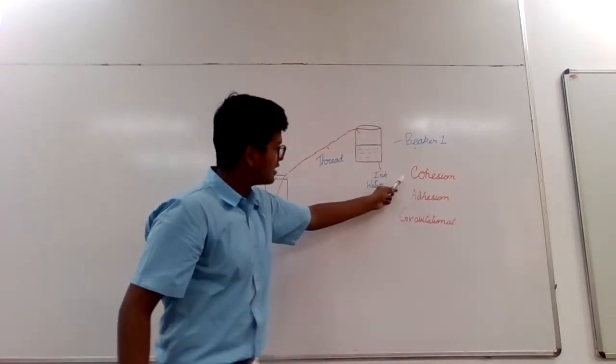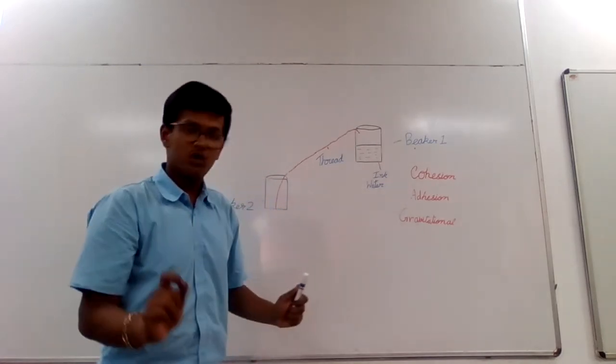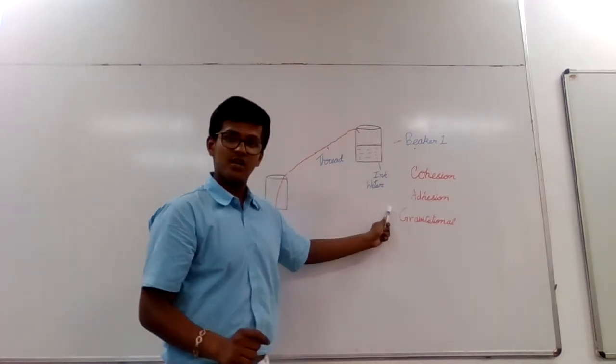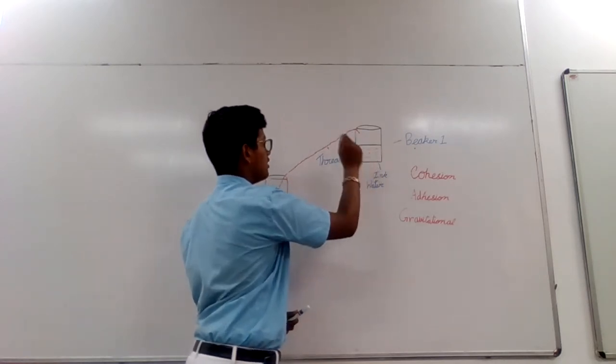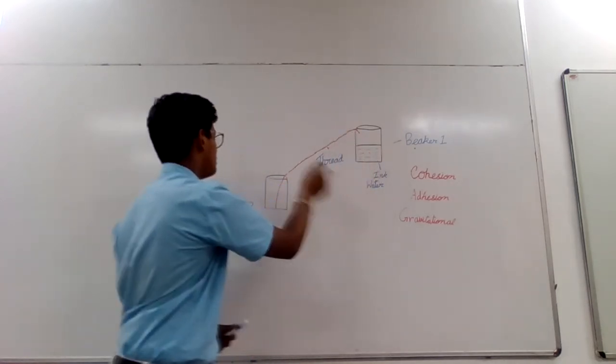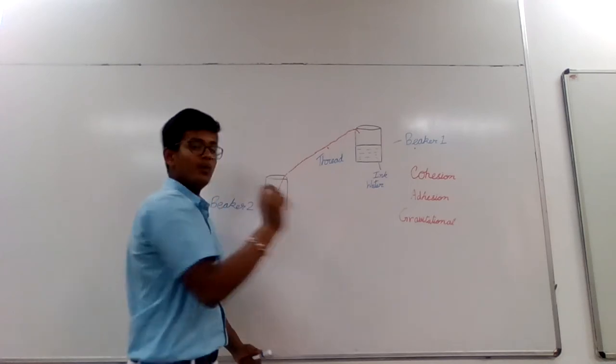So, the cohesion forces and adhesion forces in total was stronger than the gravitational force. That is why the ink water in beaker 1 was able to transfer to beaker 2 without falling.